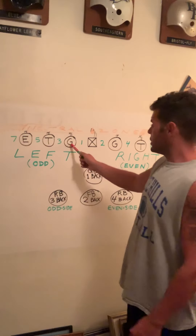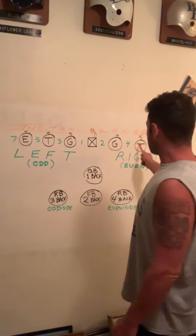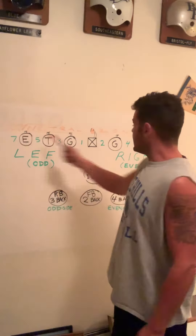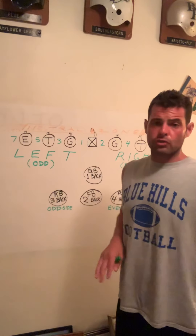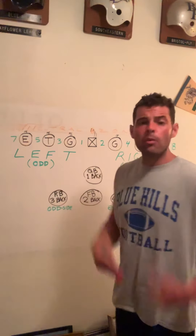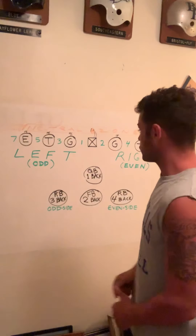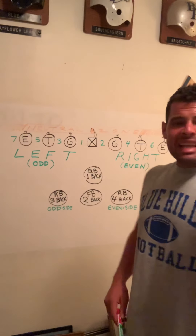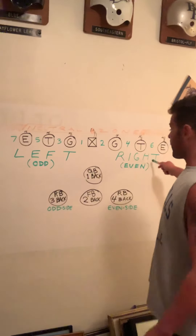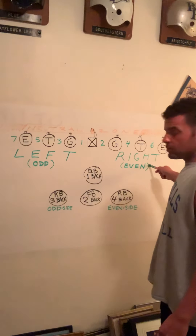You'll see the positions: X is the center, G's are guards, T's are tackles, E's are ends. Notice right here is the neutral zone — there's a football here. We can't have anything in the neutral zone, period. We want to get our offensive line as close to the neutral zone as possible. We have a left side and a right side.